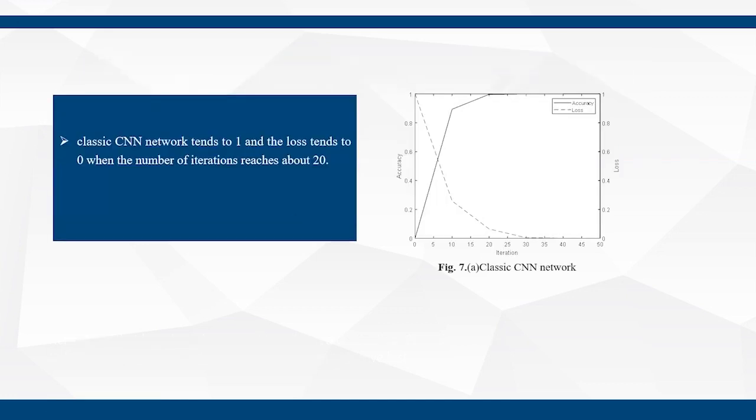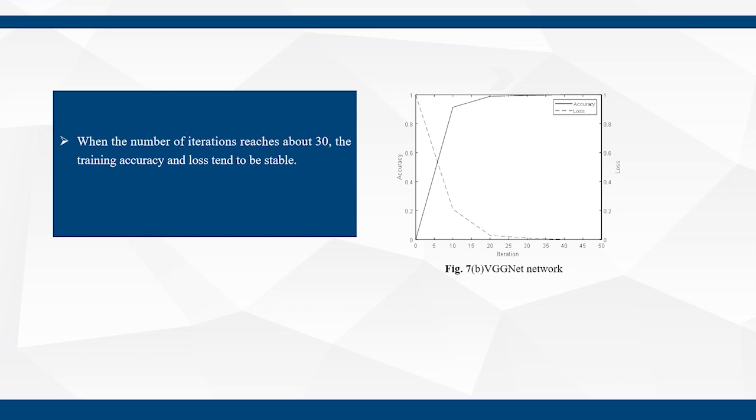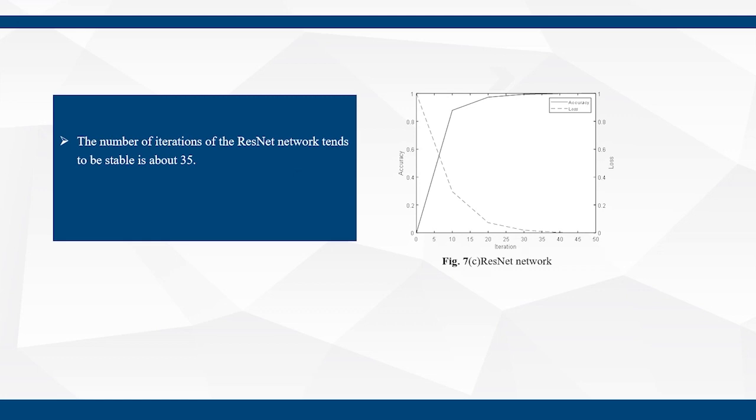Classic CNN network tends to 1 and loss tends to 0 when the number of iterations reaches about 20. VGG network, when the number of iterations reaches about 30, the training accuracy and loss tend to be stable. The number of iterations of the ResNet network tends to be stable is about 35.